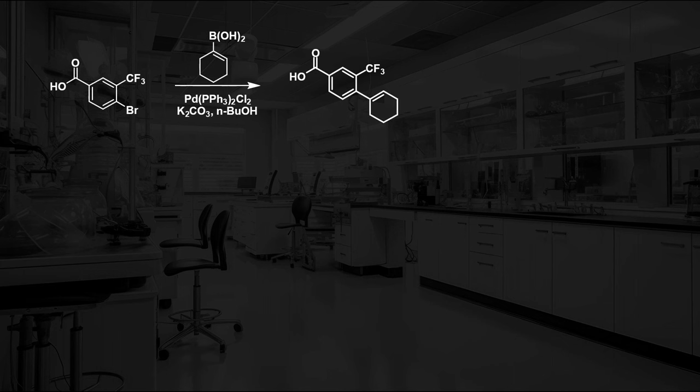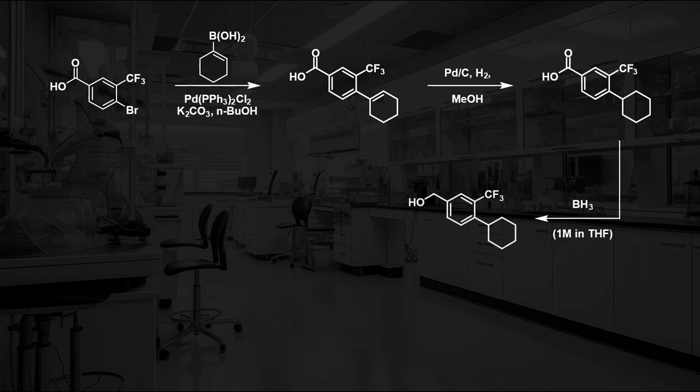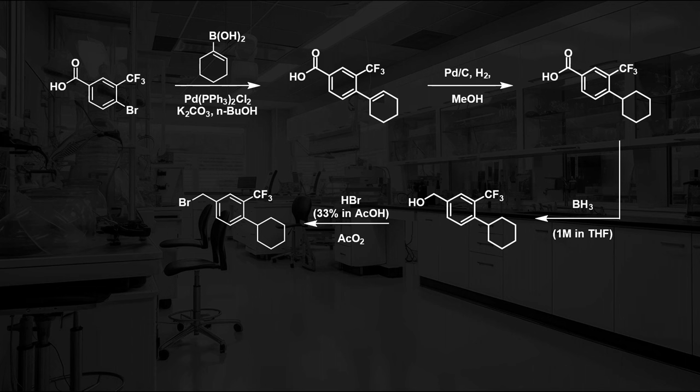For the second fragment, another Suzuki reaction is used to install a cyclohexene group, which can also be reduced using the same conditions as before to give a cyclohexyl ring. A reduction of the carboxylic acid is achieved using borane, with the resulting alcohol being converted to the bromide per a reaction with HBr and acetic anhydride. The final step in the synthesis of this fragment is the substitution of the benzylic bromide with this oxime reagent.